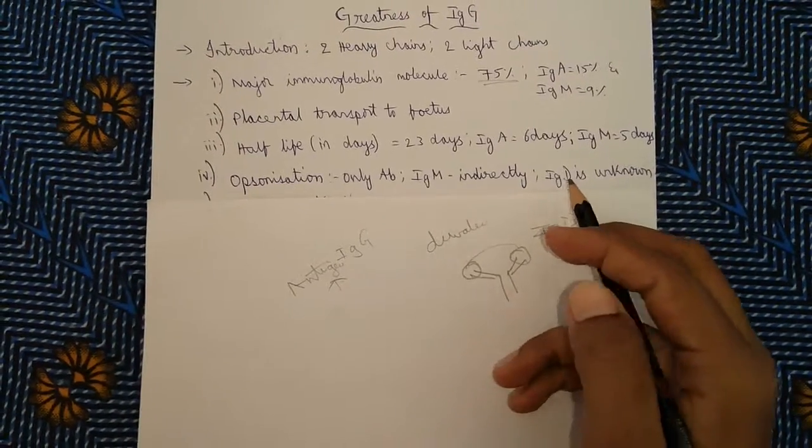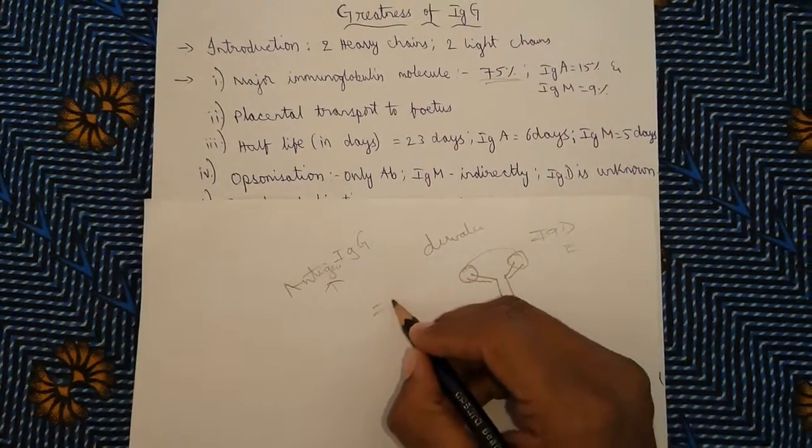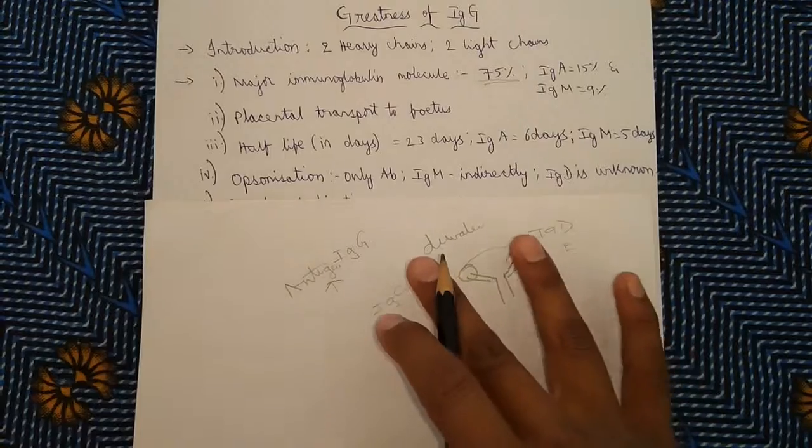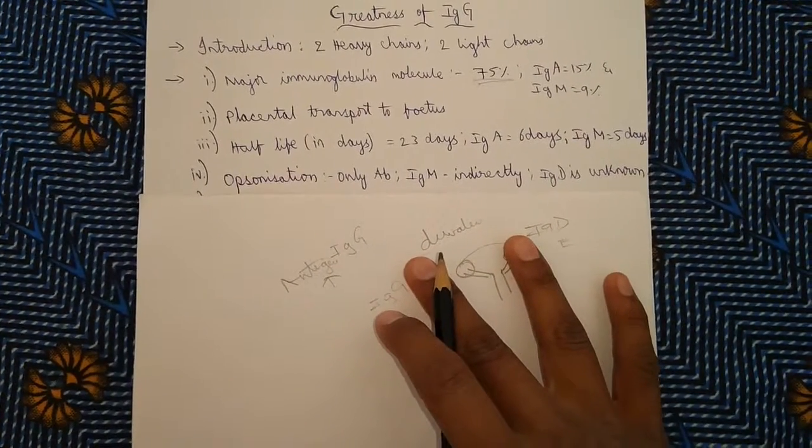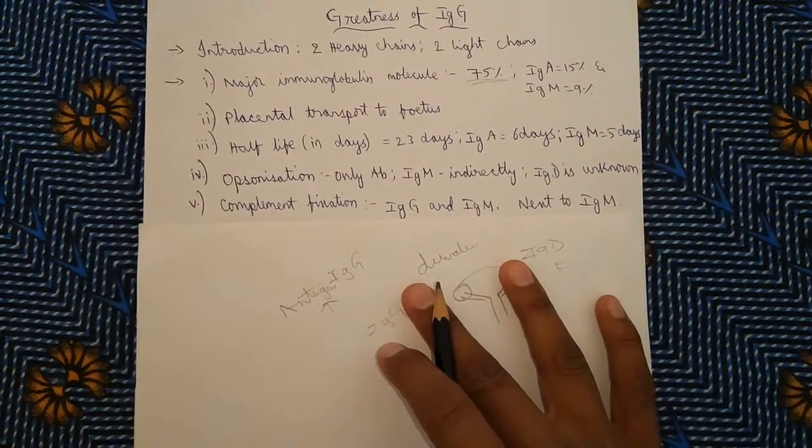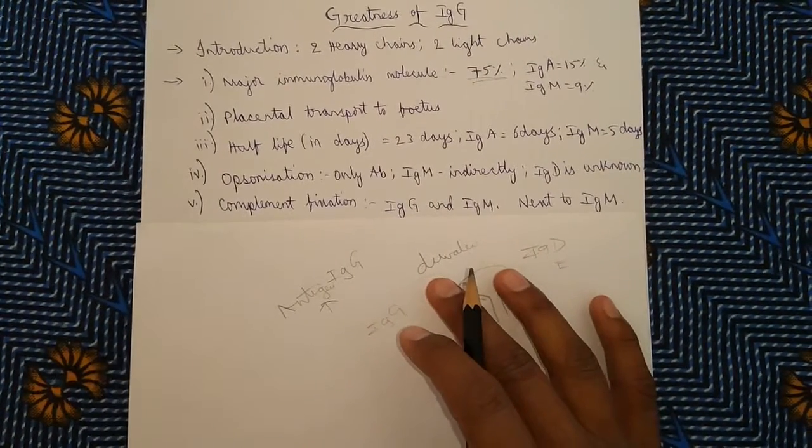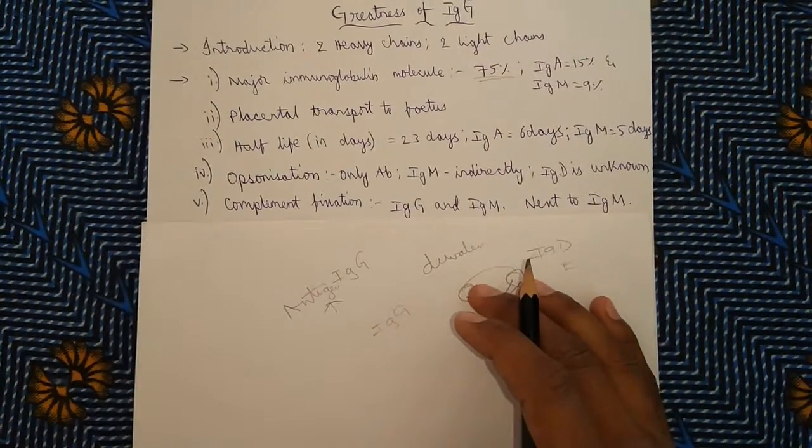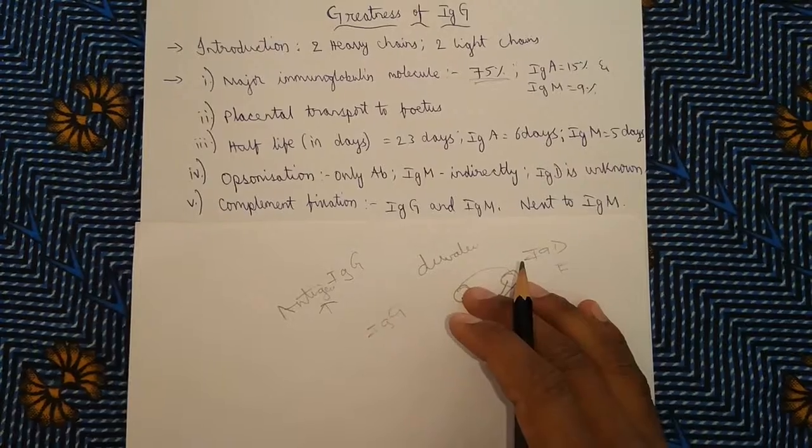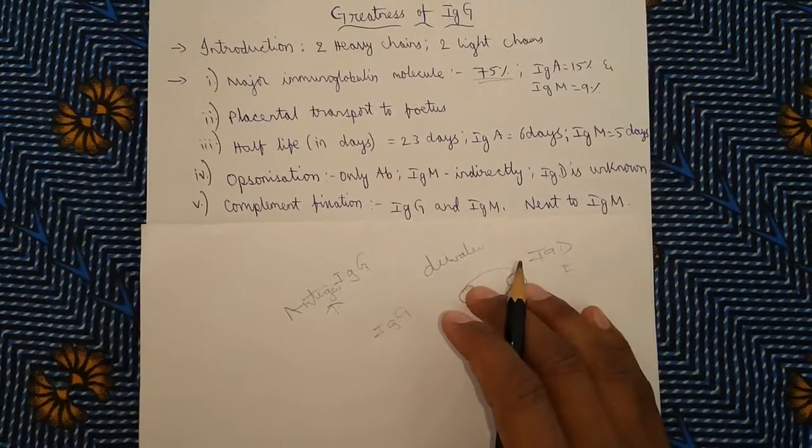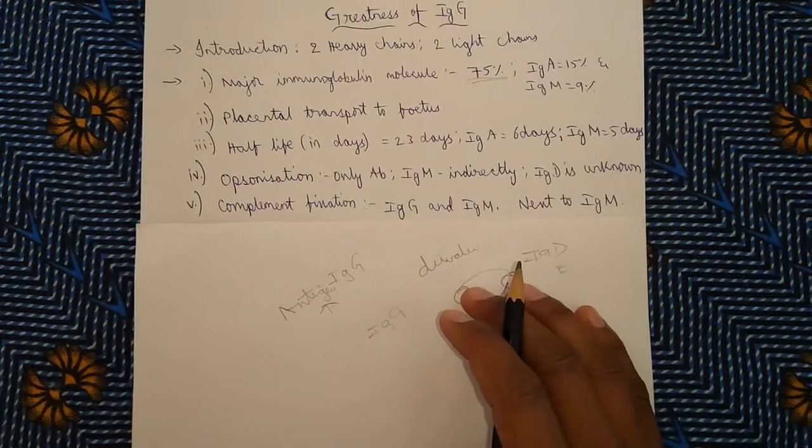What is complement fixation? Complement fixation is the process where the pathogen like bacteria or virus gets killed. Only two antibodies are having this potential: IgG and IgM. In this complement fixation, IgM has more power than the IgG.